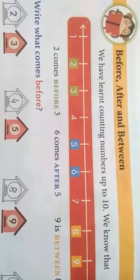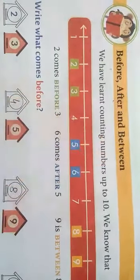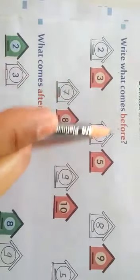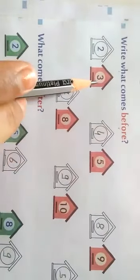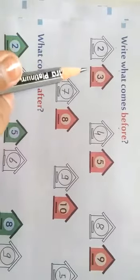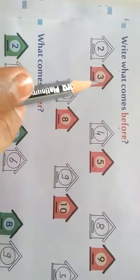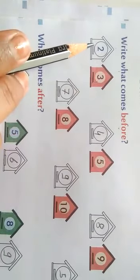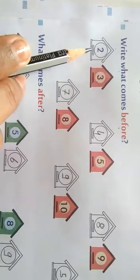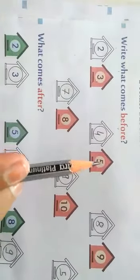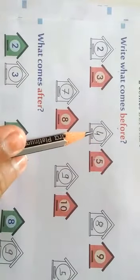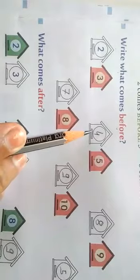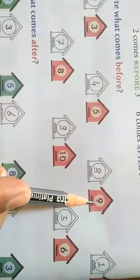Our next topic is before, after, and between. Look at the first question: write what comes before. Before means you have to tell which number comes just before the given number. In the first part, 3 is given to you — so which number comes before 3? The answer is 2, so we write 2. In this one, 5 is given — which number comes before? 4. Next, 9 is given.